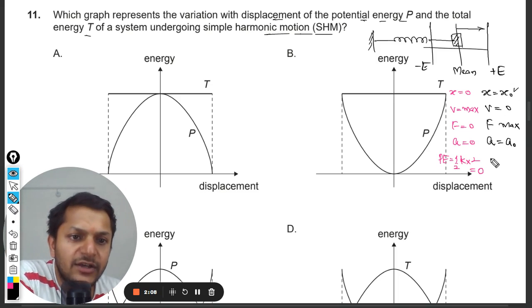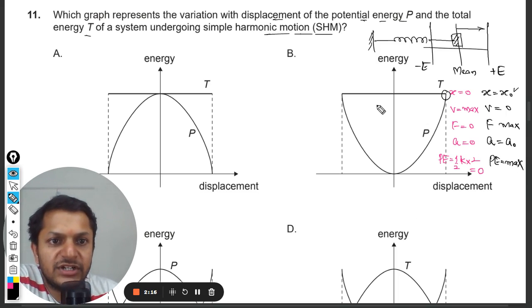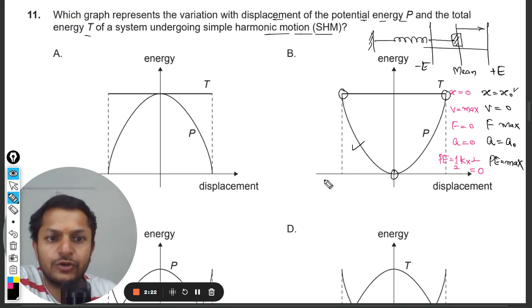So the potential energy is also maximum. So at the extreme position it is maximum and at the mean position it is going to be zero. So no doubt about that, it is going to be a parabola.